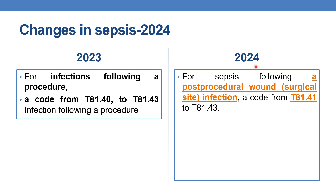The change that took place in 2024 is for sepsis following a post-procedural wound. If the physician documents 'post-procedural wound' — this word was not present in 2023; previously they simply mentioned 'infections following procedure' — in 2024, for sepsis following a post-procedural wound, that is infection at the surgical site, a code from T81.412 to T81.43 should be given.